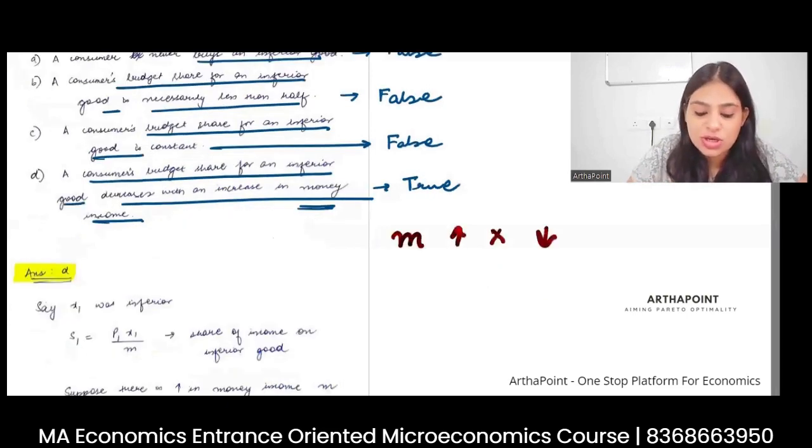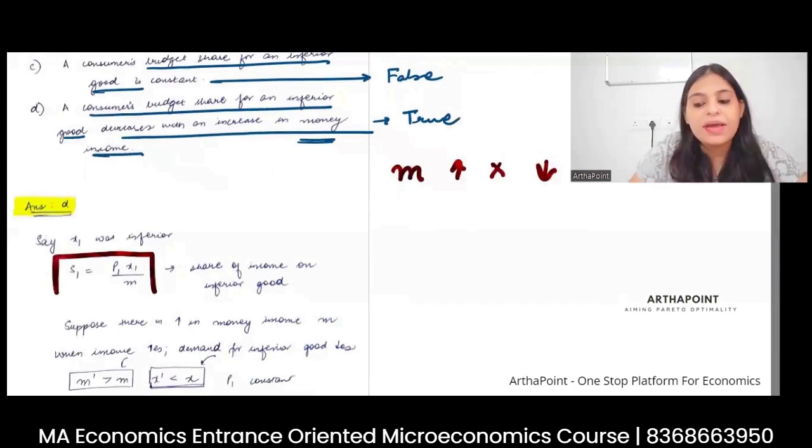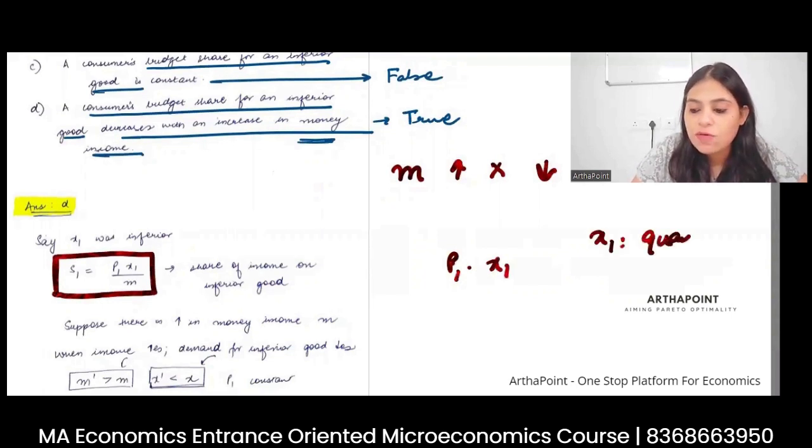How do you represent share of inferior good? Share is given by the expenditure divided by income. So it is P1X1, where X1 is the quantity of inferior good. So P1X1 divided by income.